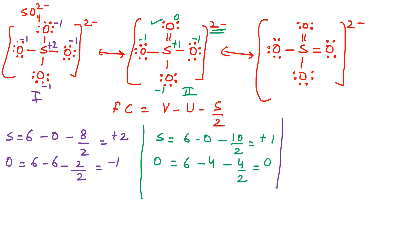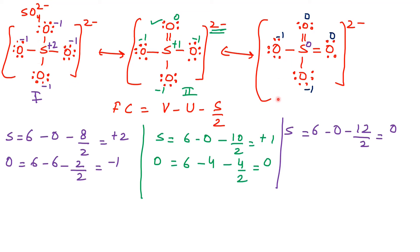For structure 3, sulfur makes 6 bonds, so its formal charge is 6 − 0 − 12/2 = 0. The two doubly-bonded oxygens each have formal charge 0, and the two singly-bonded oxygens each have formal charge −1. Comparing all three structures, structure 3 has the least formal charge — three atoms at 0 and two at −1 — while structure 2 has one atom at 0 with the rest carrying charge, and structure 1 has all atoms carrying formal charge. Therefore, structure 3 is the most stable.